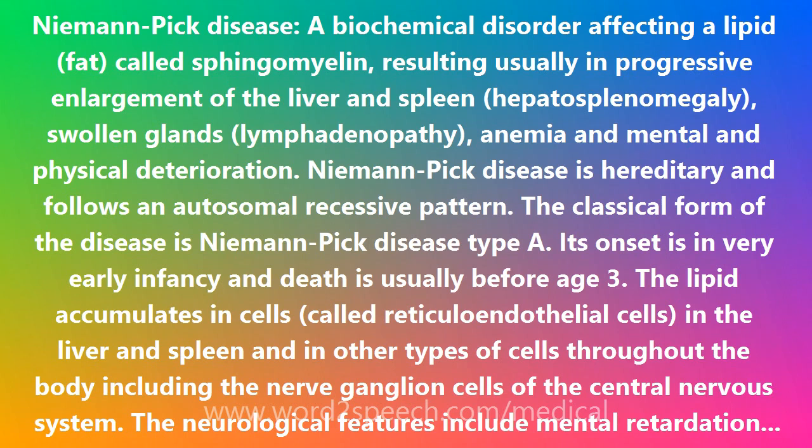The sphingomyelin accumulation is due to deficiency of the enzyme sphingomyelinase. The gene for this enzyme, and hence the location of the gene for Niemann-Pick disease type A, is in chromosome band 11p15.4-p15.1.